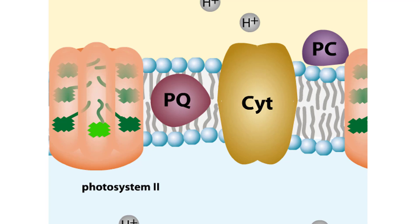After absorbing energy, the chlorophyll molecule boosts one of its electrons to a higher energy level. The electron is held very loosely and easily jumps from the chlorophyll to an electron acceptor molecule.